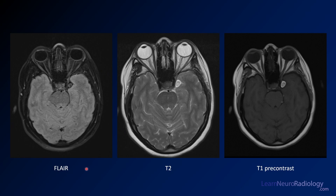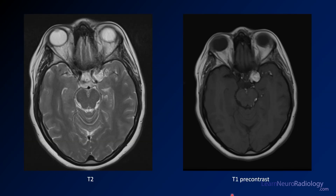Here we have our first images for this case. We have a FLAIR on the left, a T2 in the middle, and a T1 pre-contrast on the right. To make this a little easier, I've labeled the images for you. Here we have some more images — a close-up of that T2 and a close-up of that T1 pre-contrast.